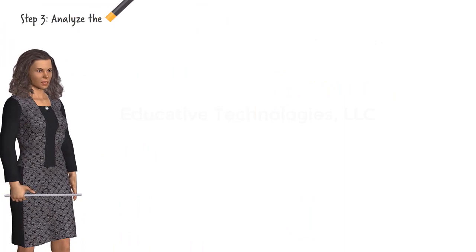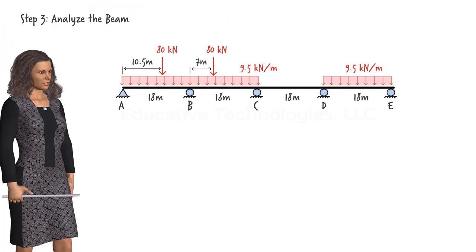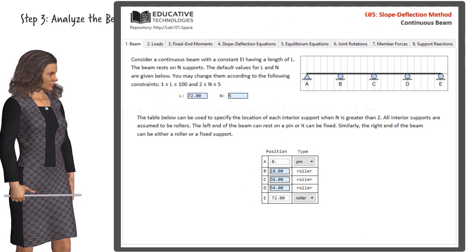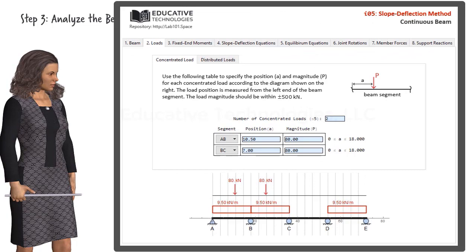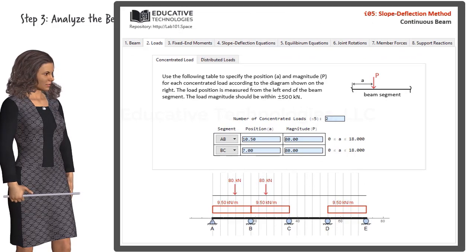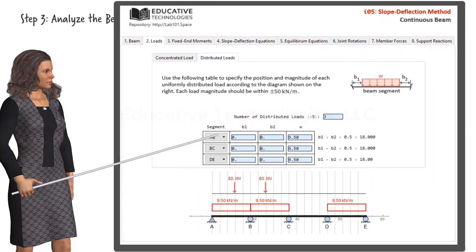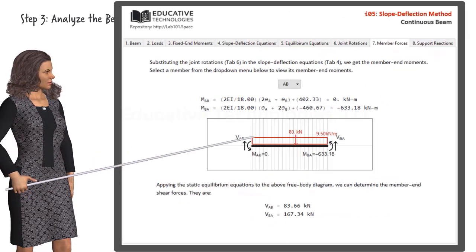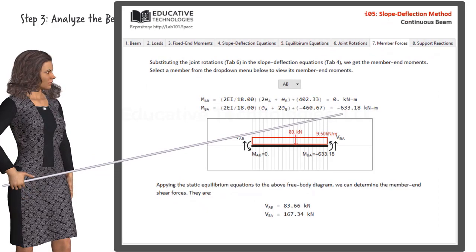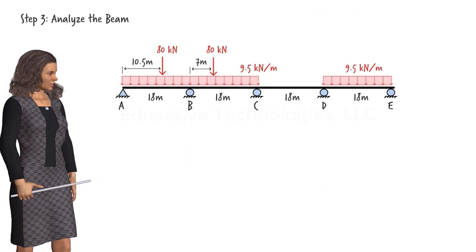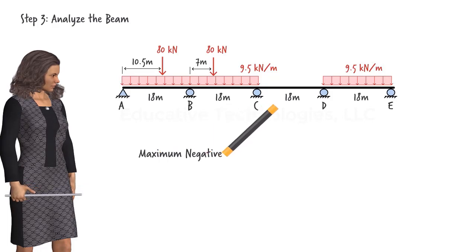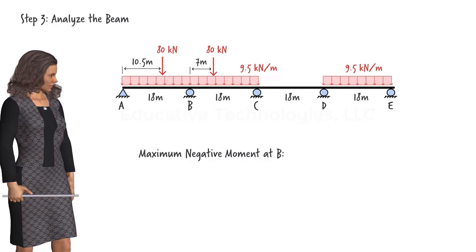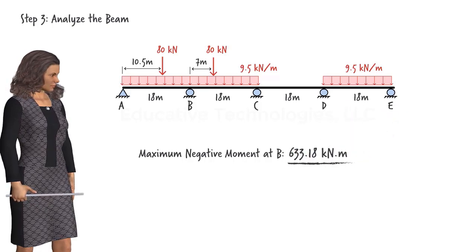Step 3. Analyze the beam. Let's use the app to analyze the beam under the combined loads. Here is the beam's definition. Here we've specified the concentrated loads and here are the distributed loads. Then we get the target moment value under tab 7. It is negative 633.18 kNm. In summary, per AASHTO specifications, the maximum negative moment at support B due to vehicular load is negative 633.18 kNm.